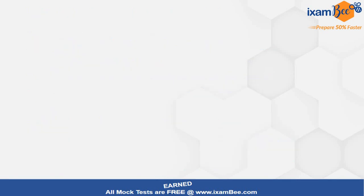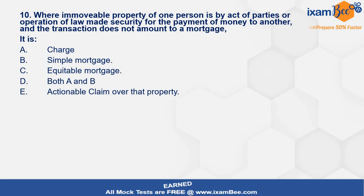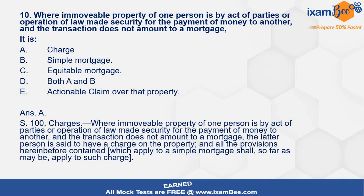Question 8 (last question): Where immovable property of one person is, by act of parties or operation of law, made security for the payment of money to another, and the transaction does not amount to a mortgage — what is this transaction called? The answer is a charge. A charge has features like that of a mortgage but is not completely the same. Section 100 deals with charges — it is for the purpose of security, but there is no delivery of possession and other features present in a mortgage.